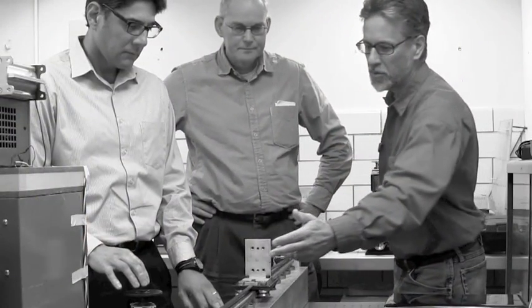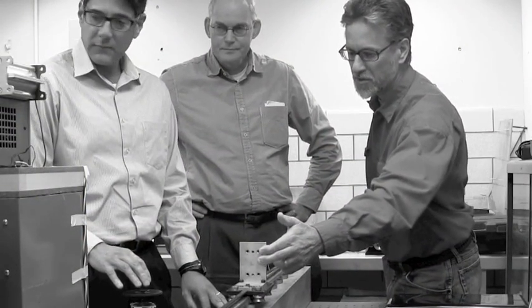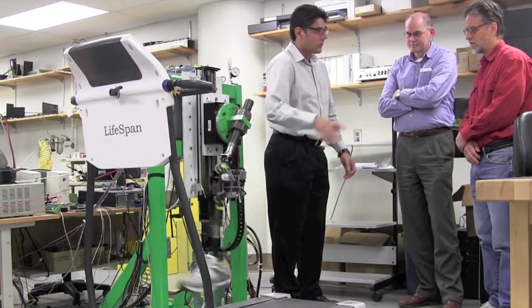With current above knee prostheses, amputees typically walk with an unnatural, stiff-legged gait. This often leads to other health problems. Our prosthesis will emulate the gait of an able-bodied person and reduce adverse health effects.